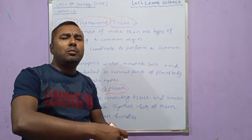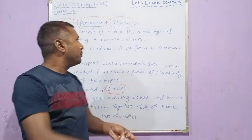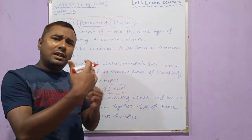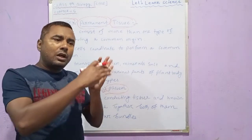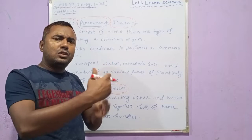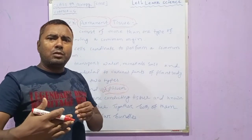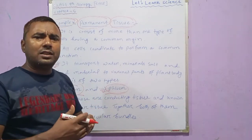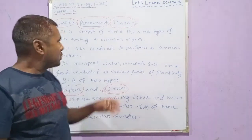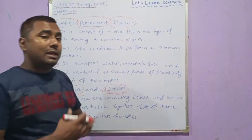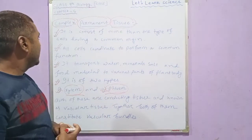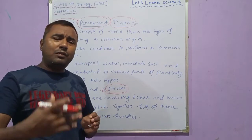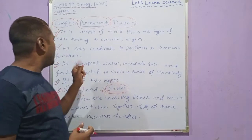However, all the cells have a common origin — they originate from the same place. That type of tissue is termed complex permanent tissue. It is called permanent because these tissues lose the capacity of dividing. After dividing and contributing to growth in different parts of the plant body, they take a permanent shape, size, and function.